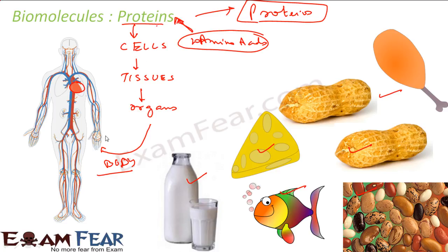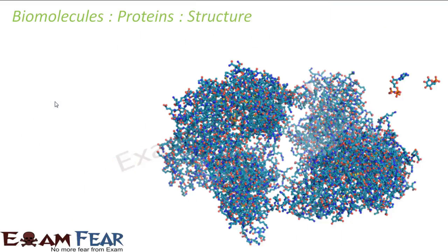Proteins are required for the growth and maintenance of the body — they are very critical. The word 'protein' derived from 'protease' means prime important, and proteins occur in every part of the body: lungs, heart, brain, eyes. Now, the structure of protein is totally complicated and confusing.